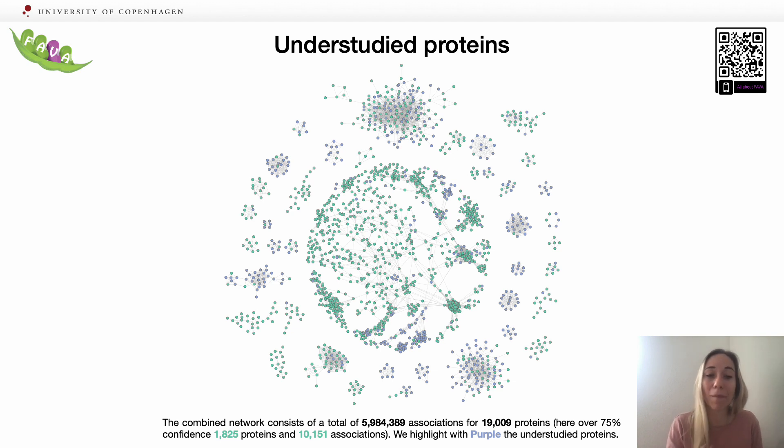Here you can see our combined network from single-cell and proteomics data, actually the network that is over 75% confidence, and I highlight with purple the understudied proteins.